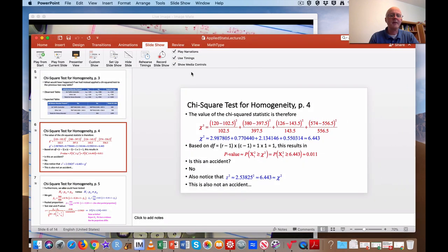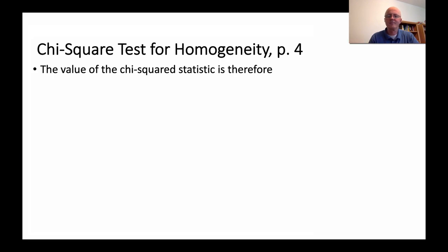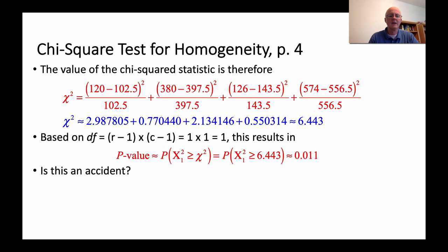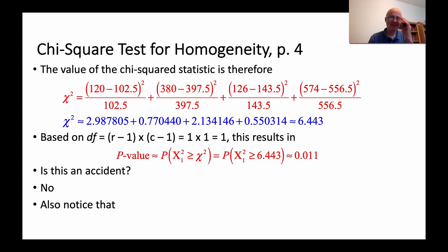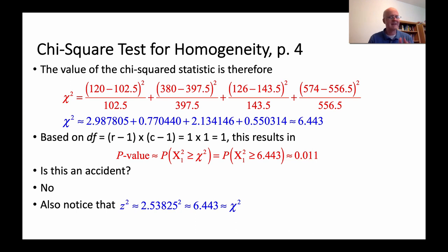Is it an accident that the p-value is the same? No. Not only is the p-value the same, but the Z statistic and the chi-square statistic are related: if you square the Z statistic, you get the chi-square statistic. That's not an accident, though I won't get into the reasons why.